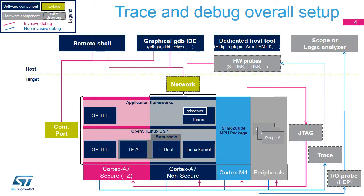This impact can be important, and this has to be known and taken into account by the user when setting up the system. This scheme is a representation of the trace and debug environment on STM32MP1 microprocessors, showing the different hardware and software paths which interface with the cores and hardware peripherals on the target side. The host side represents a different group of tools to interface with the user and is able to manage and/or display the trace and debug data.